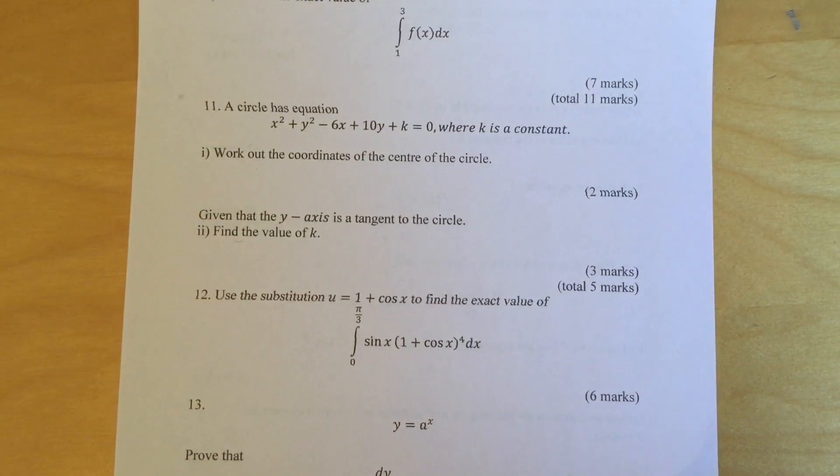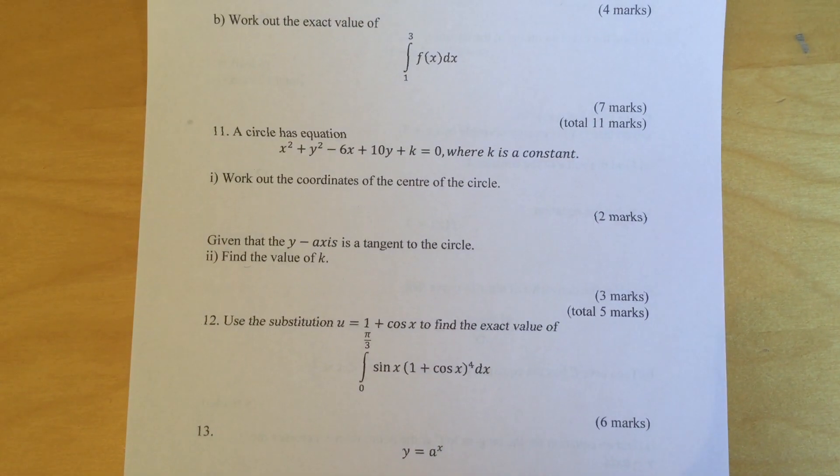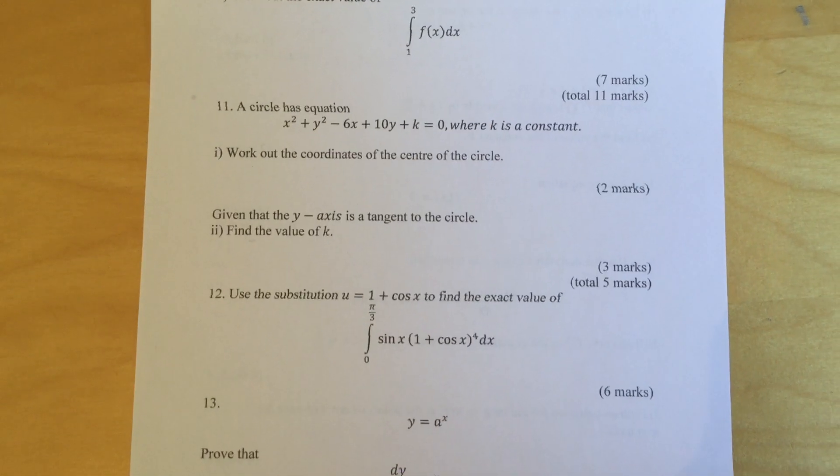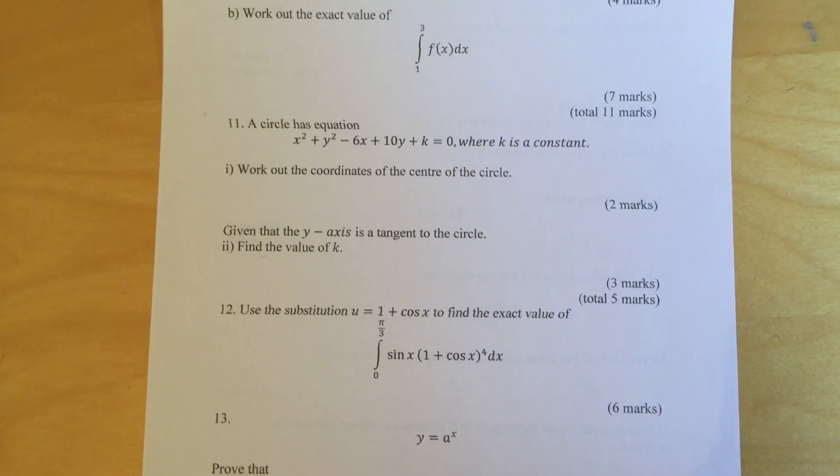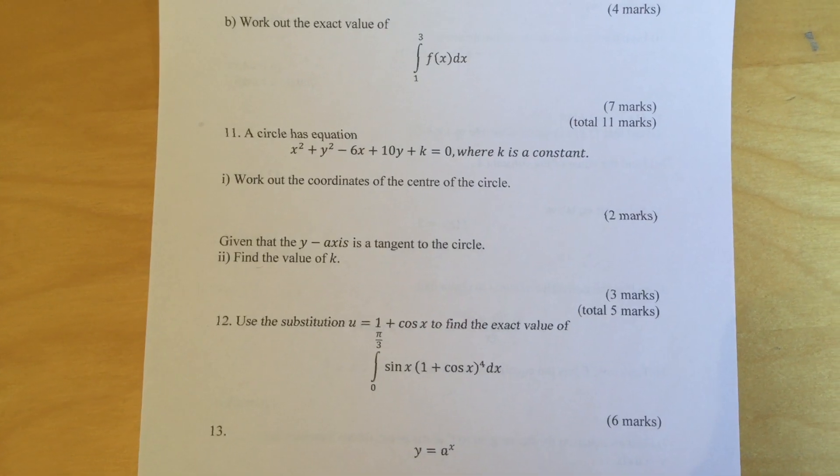Question 12: Use the substitution u = 1 + cos x to find the exact value of ∫₀^(π/3) sin x(1 + cos x)⁴ dx.